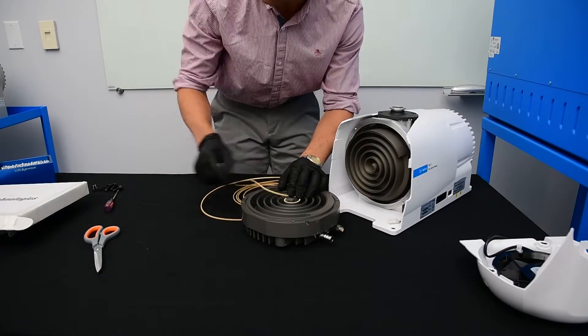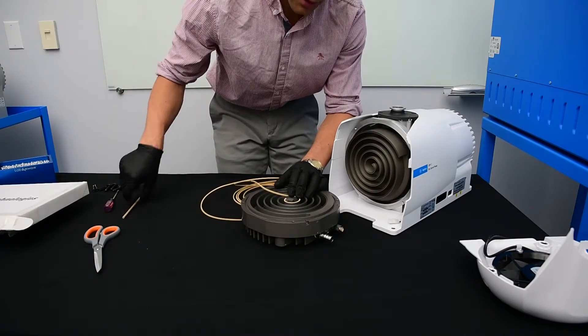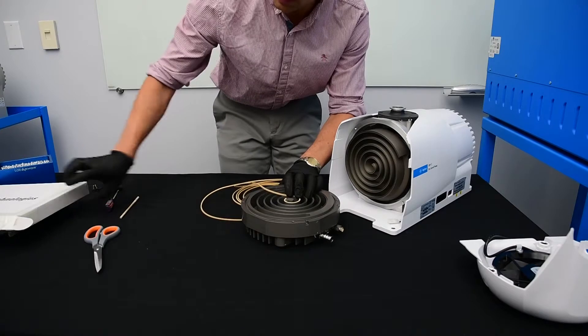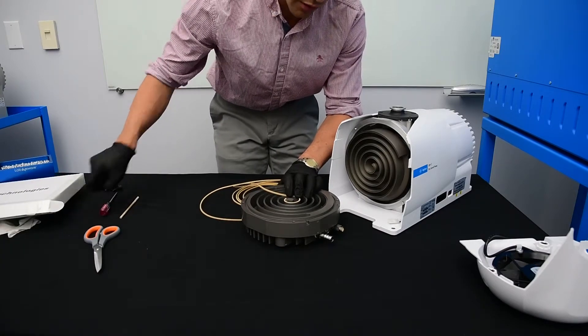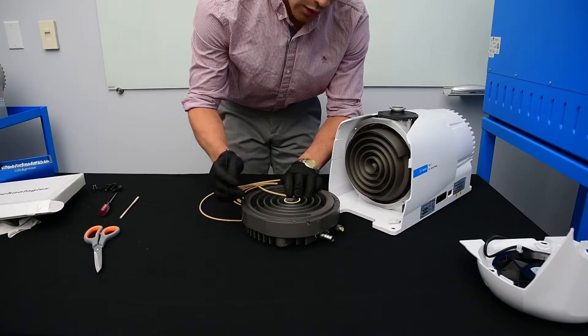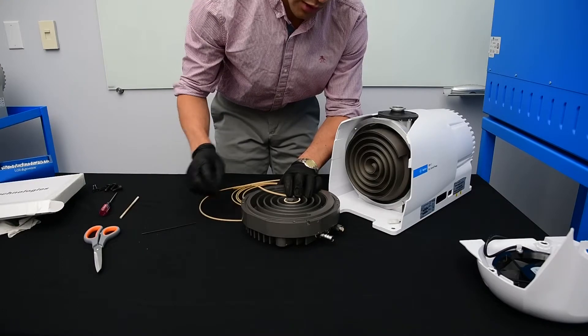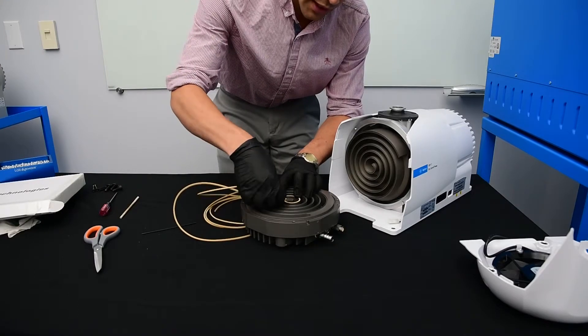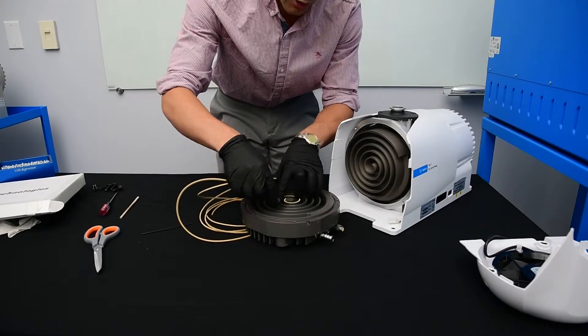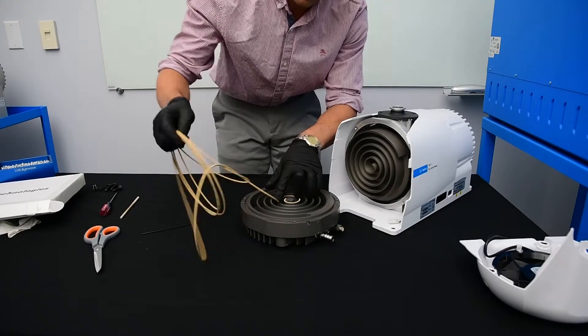As we work our way around, we're going to come across some small grooves right here. These small grooves hold the tip seal in place. When you get there, you're going to have to use a wooden dowel to help press the tip seal down into the channel.